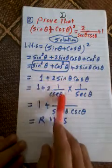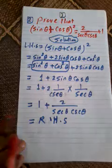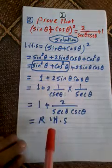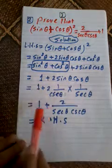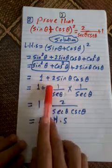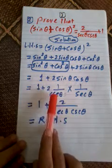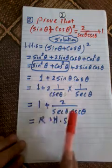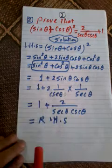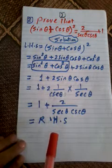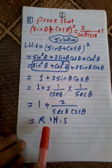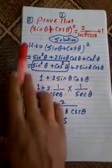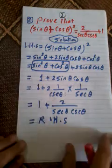Since sine theta equals one over cosecant theta and cosine theta equals one over secant theta, we get one plus two times one over cosecant theta times one over secant theta, which equals one plus two over secant theta times cosecant theta. This equals the right hand side.